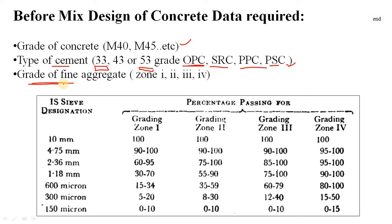The grade of fine aggregate tells you how fine or coarse the sand is. In the Indian IS code it is defined as zones. To determine this, you take a sample from your stack of sand at the site. Based on IS sieve designation, you prepare sieves: first 10 mm, then 4.75, 2.36, and so on. You simply sieve the sample using the standard sieving method and calculate the percentage passing.